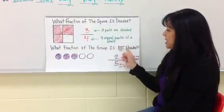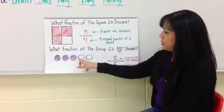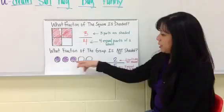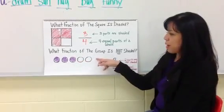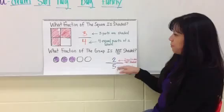What fraction of the group is not shaded out of this one? I have one, two, three, four, five equal parts. Three are shaded, but two are not. So my fraction for the not shaded is two out of five.